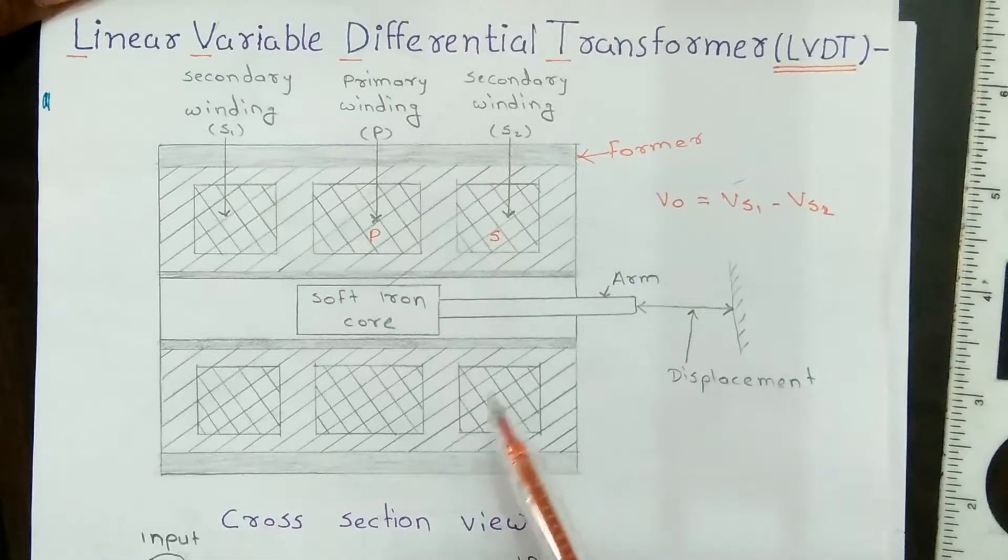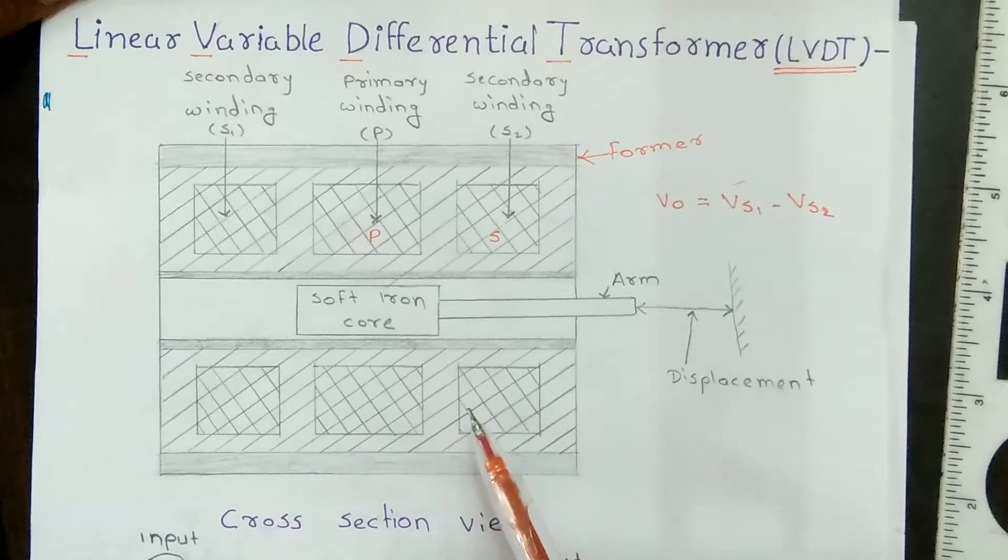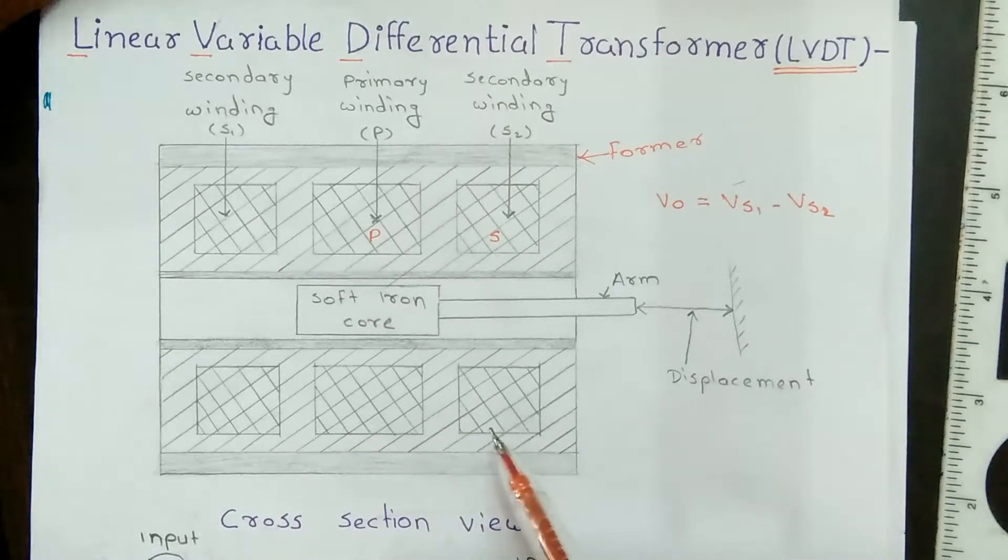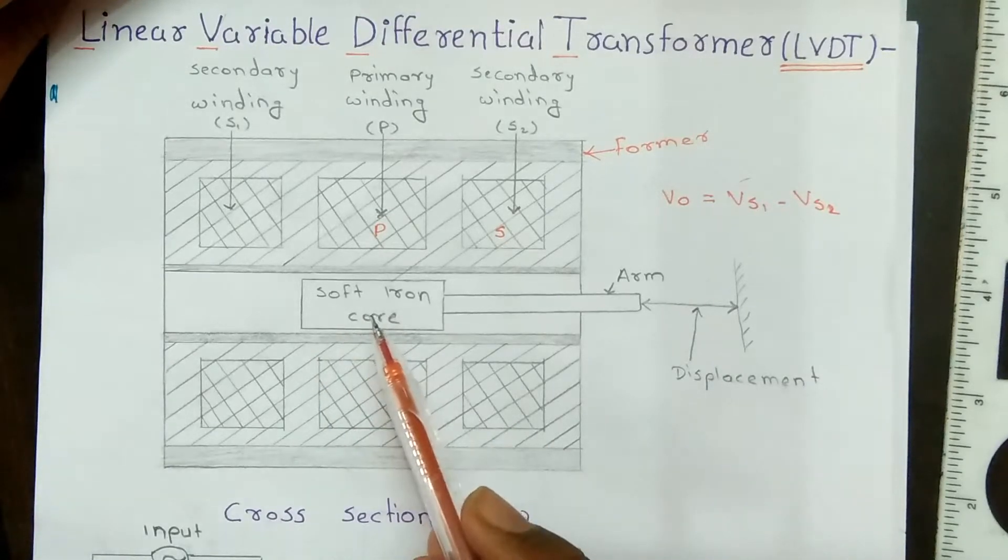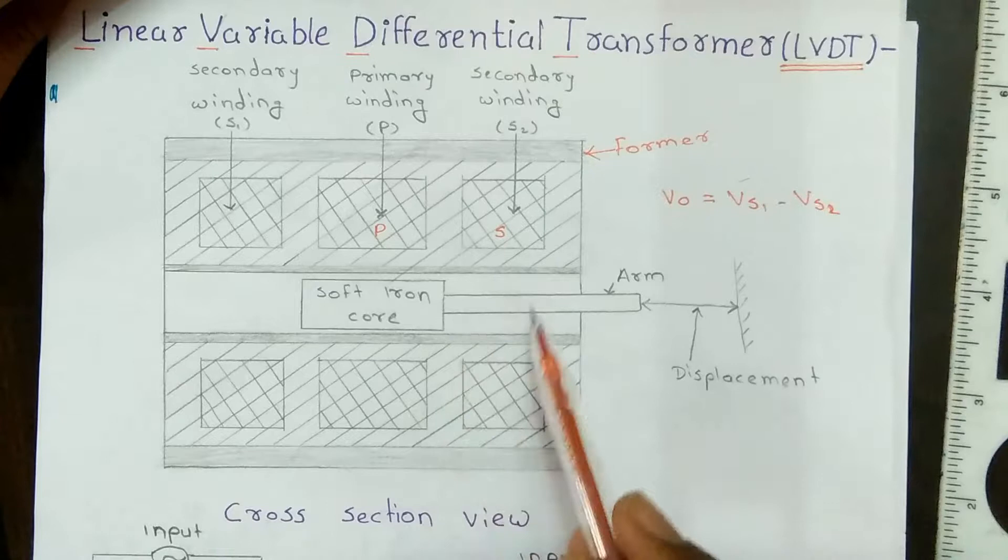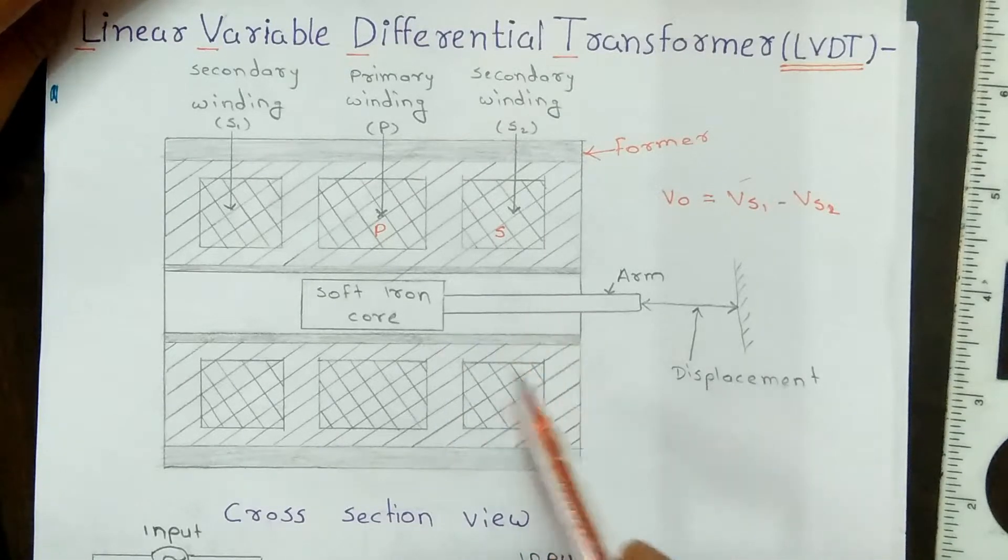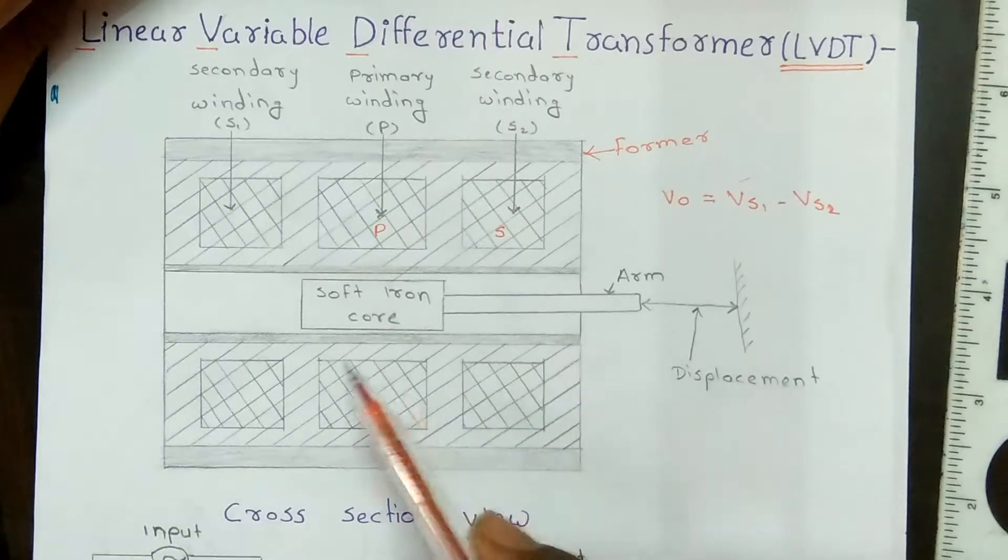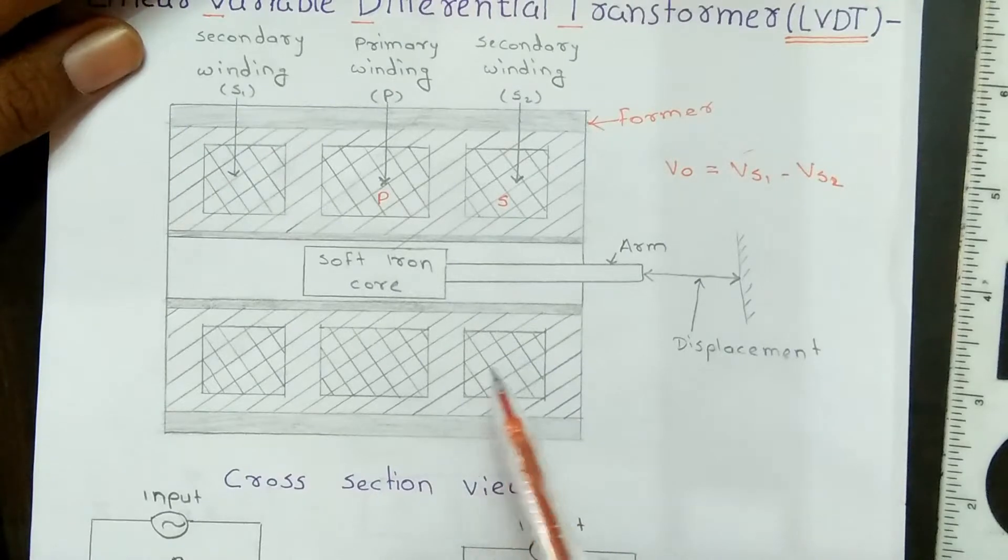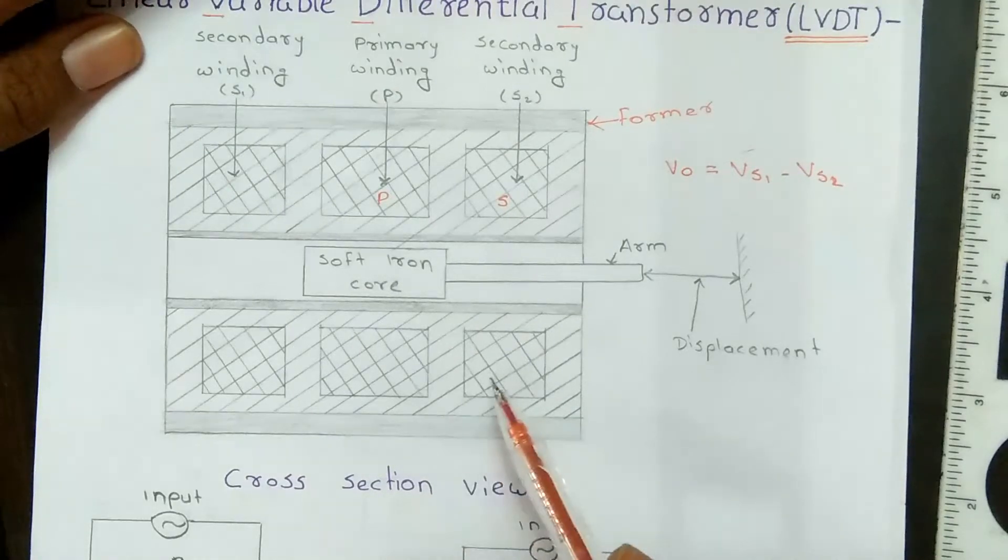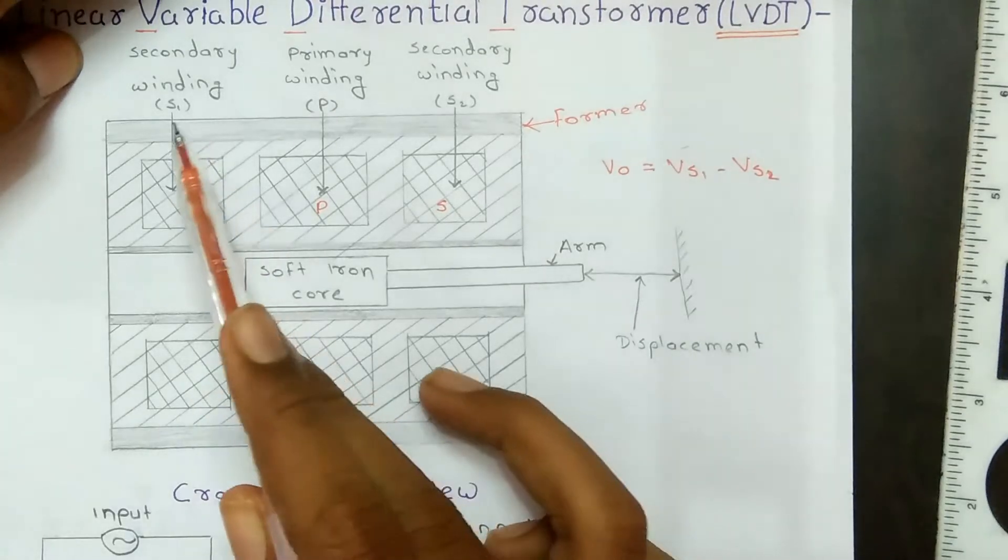They are connected in series with each other with a phase difference of 180 degrees out of phase. A movable soft iron core is placed inside the former, and one arm is attached to the core. The output voltage of LVDT is the differential between the voltages, given as VO = VS1 - VS2.